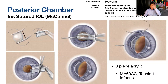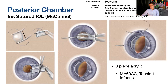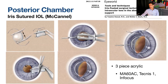Moving to posterior chamber IOLs and their fixation techniques — the first is iris-sutured IOL fixation, first described by McCannel many years ago. In this modified McCannel technique, the IOL is held on its horizontal axis so the haptics cross one another. The lens is inserted with a Burato forceps; we use a cyclodialysis spatula to prevent it from going into the vitreous cavity. The lens then opens and is captured behind the pupil.